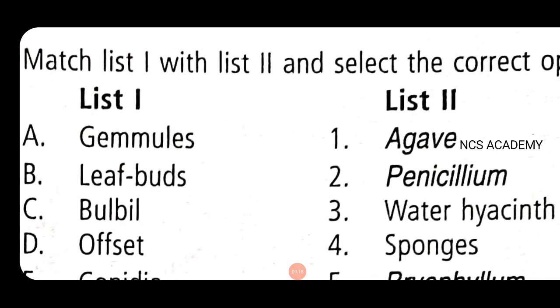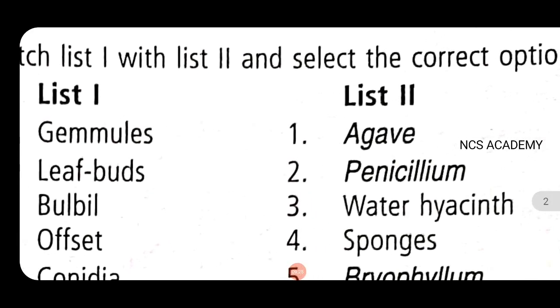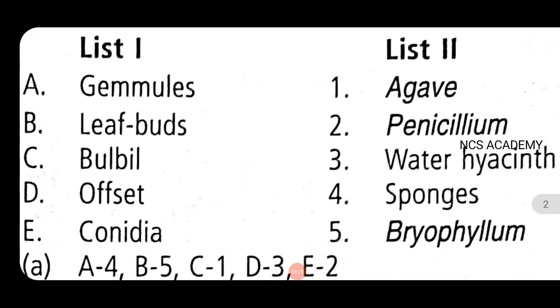Next question, Kerala PMT: Match list 1 with list 2 and select the correct option. This is the right option. Leaf buds is the right option, bulbils are the right option for agave. Offset for water hyacinth. And the conidia is penicillin. So the right option.